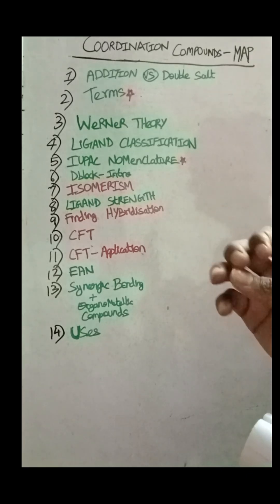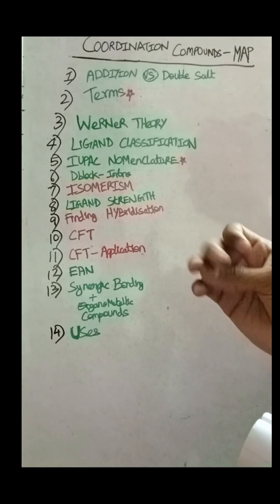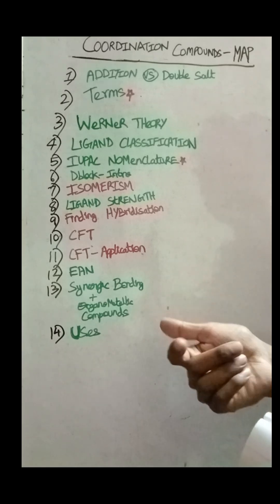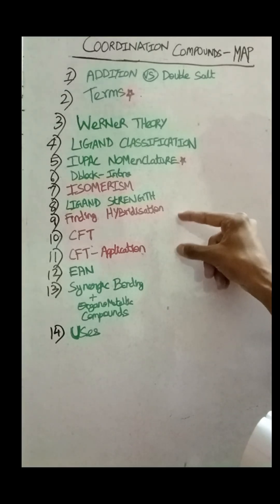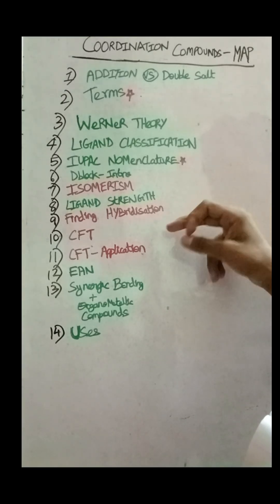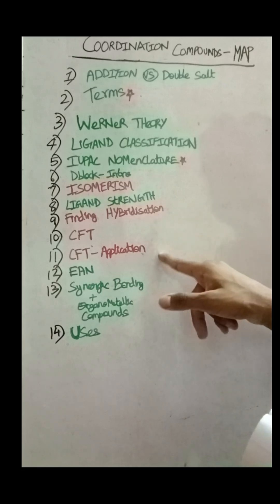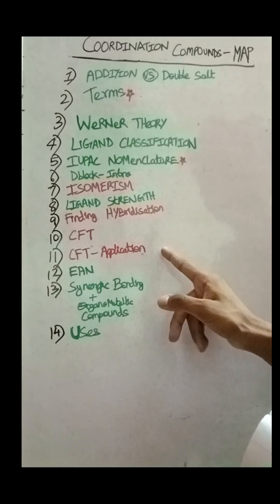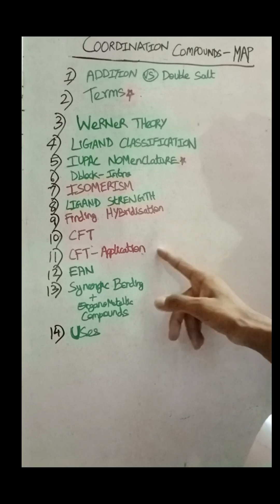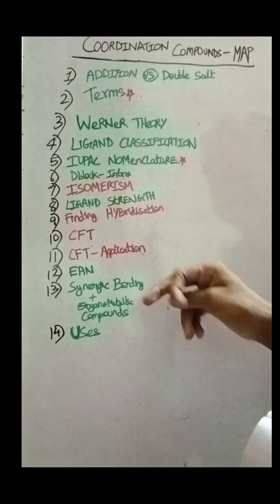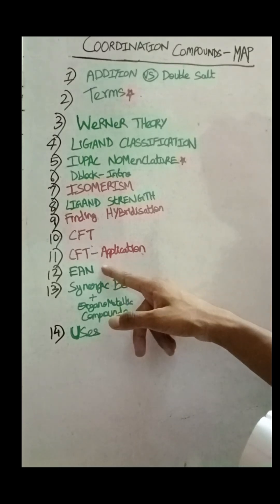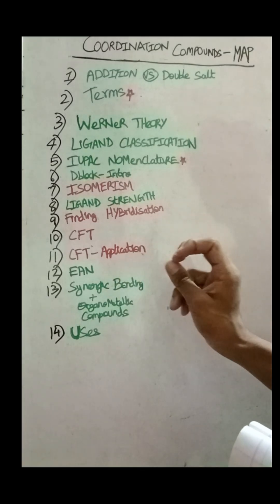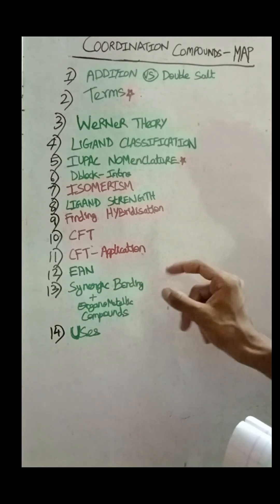Crystal Field Theory is a concept that is easy to explain. Crystal Field Theory is an application, and this was a question in 2022. Then, EAN — this is another topic.